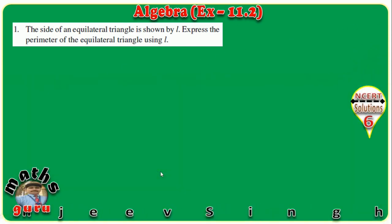An equilateral triangle is a triangle in which all sides are equal. We represent each side by L. To find the perimeter of the equilateral triangle, we add all three sides. Because there are 3 sides and each side is L, the sum of 3L is 3L. So the answer is 3L.